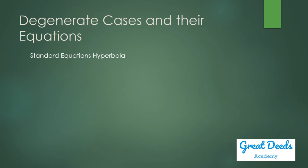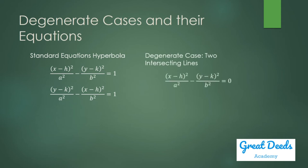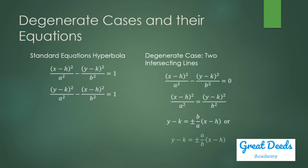These are the standard equations for a hyperbola. The standard equation for a hyperbola will yield a degenerate case when, instead of these terms being equal to one, they are equal to zero. Taking the square roots of both terms of your equation, this is what you will get. These are equations of a line in slope-point form — when you are given the slope of a line and the line passes through the point with coordinates (h, k), this is how you write their equation.